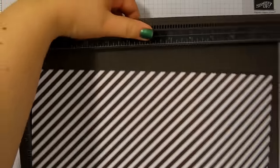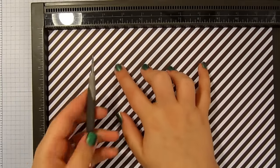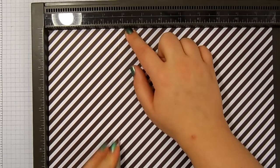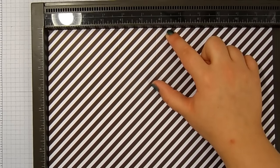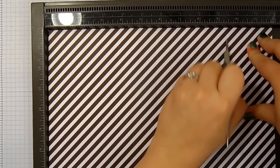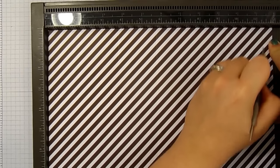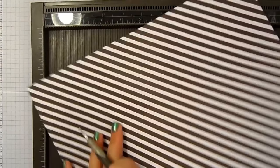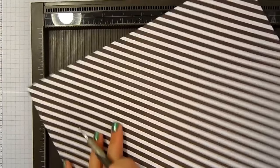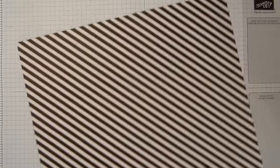Using our simply scored scoring tool we are going to score, and I'm really sorry because I meant to do the metric measurements for this. They will be on my blog so the link is in the down bar below. We're going to score at three and three quarters of an inch, five and three quarters of an inch, nine and a half and eleven and a half inches. I'm going to turn it around and score it at two and at nine inches.